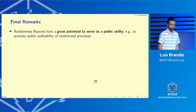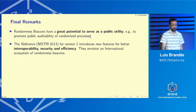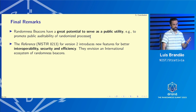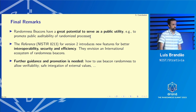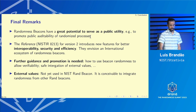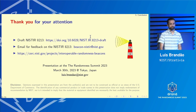In conclusion, the beacon project at NIST arose from believing there's great potential for public randomness to serve as a resource for public auditability of randomized processes. The reference NIST developed introduced new features for better interoperability, security, and efficiency, with the vision of an international ecosystem of randomness beacons. Even though it's a centralized proposal, it's for use within an ecosystem. Further guidance and promotion is needed. External values are not yet used in the NIST randomness beacon, but this is conceivable to integrate with other randomness beacons — I think that's an interesting community conversation to have. Stay tuned for the soon-to-come reference.